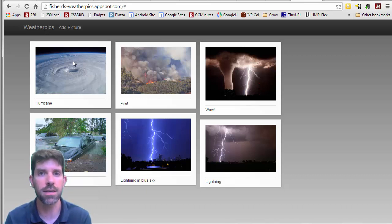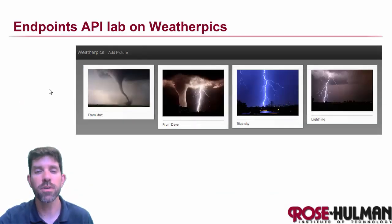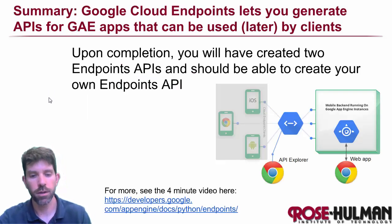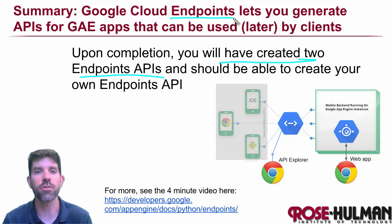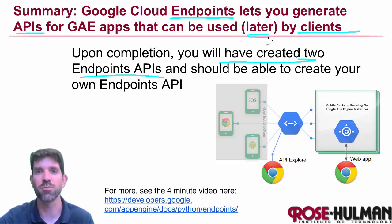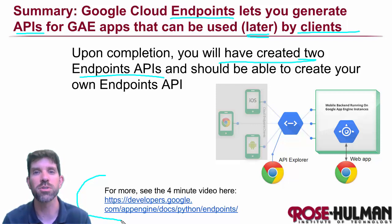Pretty cool stuff — lots of fun both on the back end and eventually in a client. By the time you finish this entire lab, you will have created two endpoint APIs. Remember, the whole deal with endpoints is that you can generate APIs that can be used by clients. Once you've done this lab, you're ready to jump into the client of your choice. If you do want more, there is a nice video that Google has put out — I'd encourage you to go check it out. Otherwise, have a wonderful day. We'll see you later for the next unit.